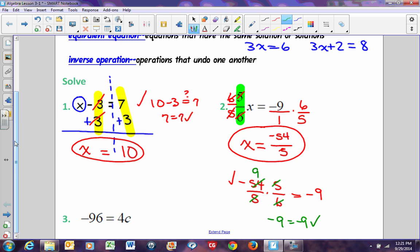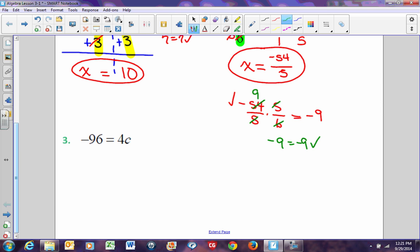This last example, you can see that we have negative 96 equals 4c. What was done to c? c was multiplied by 4, so we must divide by 4. We're not going to write down divide by 4 this way, because that's not algebraic. The fraction bar is the same as division. So if I'm going to divide this side by 4, I must divide this side by 4. These two 4s cancel out, and negative 96 divided by 4 is negative 24. So c equals negative 24. You can check: if you took negative 24 and multiplied it by 4, it does equal negative 96.